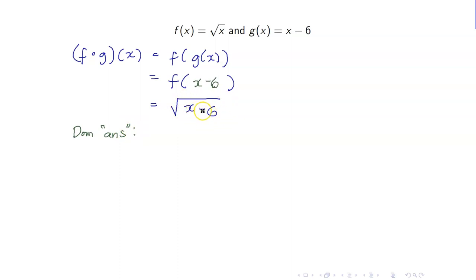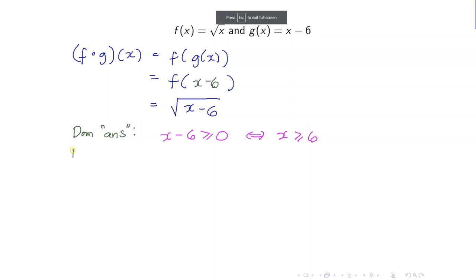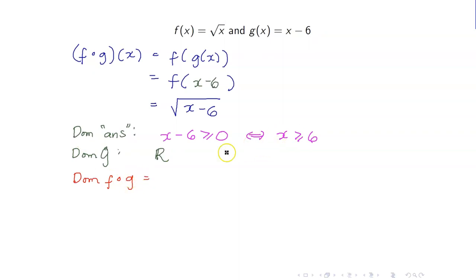Since you have a square root sign, you have to set the radicand to be greater than or equal to 0. So x minus 6 greater than or equal to 0 means x is greater than or equal to 6. Then get the domain of the inner function g. The domain of g is the set of all real numbers — no restrictions for x minus 6. Therefore the domain of f circle g is the intersection of these two, which is x greater than or equal to 6, or in interval notation, 6 to infinity.